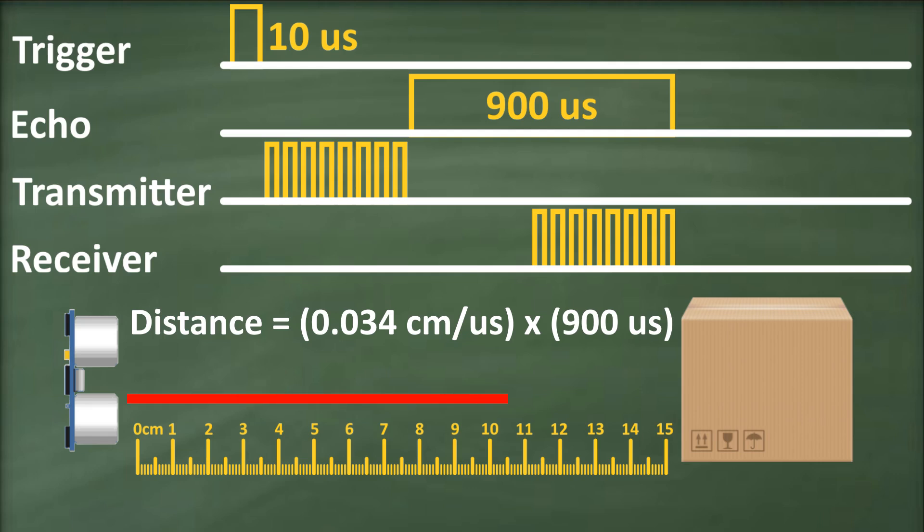the echo pulse represents the total time for the signal to travel to the object and back, so we divide the time by two since we only want to find the distance of the object from the sensor.